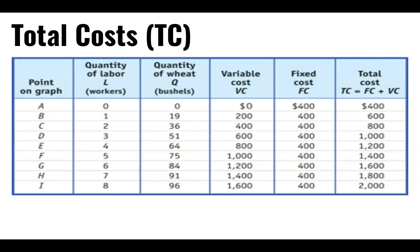Total cost is the sum of fixed and variable costs. If you get a table like this on the AP exam and they ask what are the fixed costs, the way to find them is to look for where quantity is zero and see what the cost is. In this case, they have to pay $400 even if they produce nothing — that is their fixed cost. You'll notice the fixed cost never changes regardless of how much is produced. Add fixed and variable together and that gives you total.